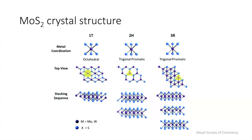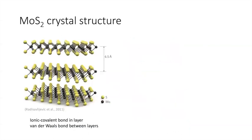Its bulk structure can be trigonal, hexagonal, or rhombohedral. The three main structures of MoS₂ are 1T, 2H, and 3R, where 1T is metallic and the other two are semiconducting. The most stable form is the 1H configuration, which is the sandwich structure formed by two hexagonal planes of sulfur and one hexagonal plane of molybdenum. Each molybdenum atom in the intermediate plane is ionic-covalently bonded to six sulfur atoms in the top and bottom planes, ensuring the stability of the MoS₂ monolayer. The bulk crystal is formed by stacking multiple MoS₂ monolayers, where the layers are attached by weak van der Waals forces.